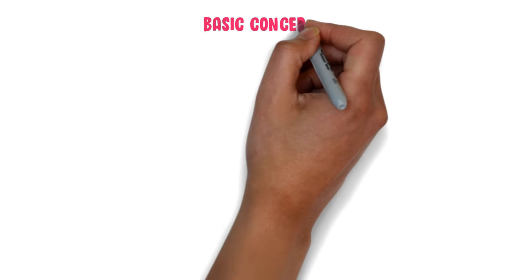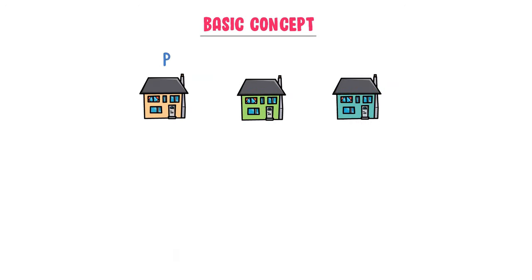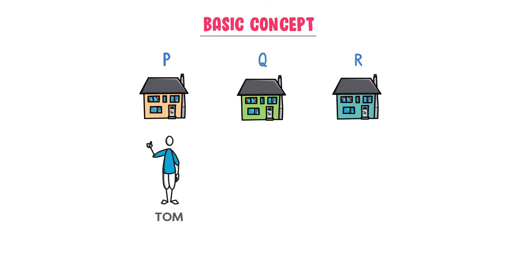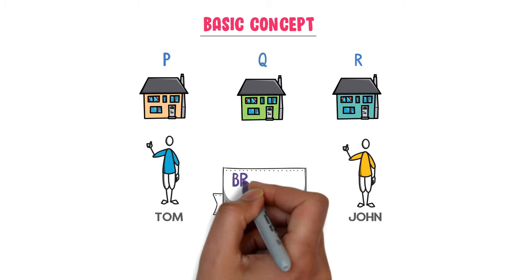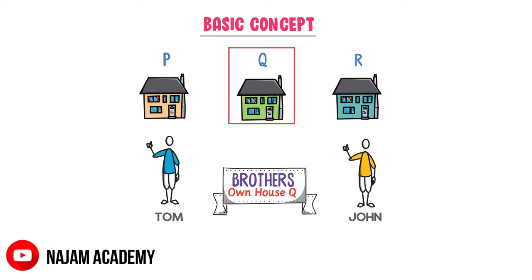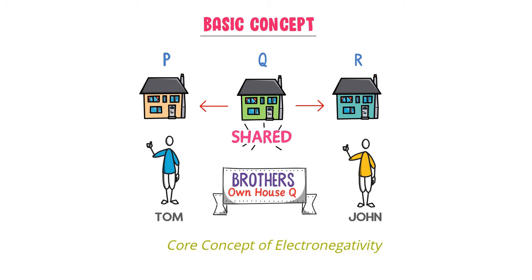Firstly, let me teach you the basic concept of electronegativity. Consider three houses: P, Q, and R. Let house P belong to Mr. Tom and house R belong to Mr. John. Mr. Tom and Mr. John are brothers, and they both also own house Q — house Q is shared by them. Thus, house Q is mutually shared between them. This is the core concept of electronegativity.